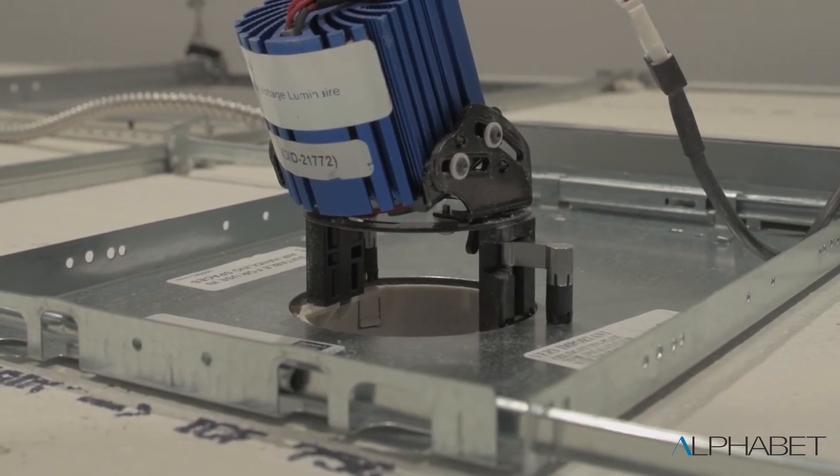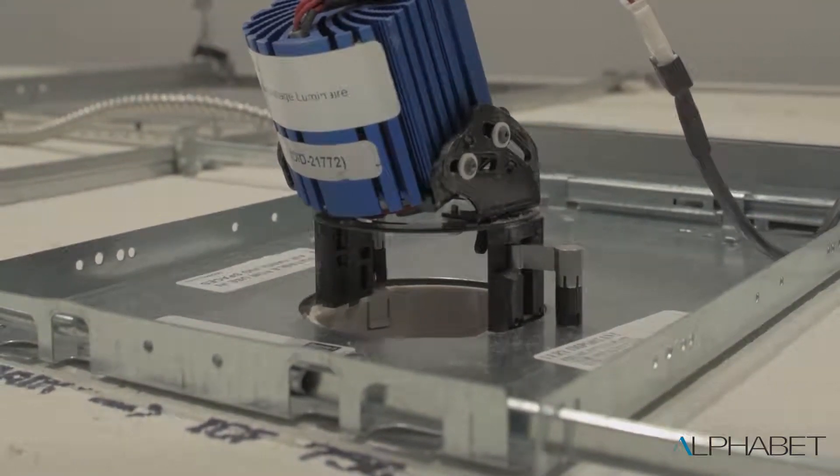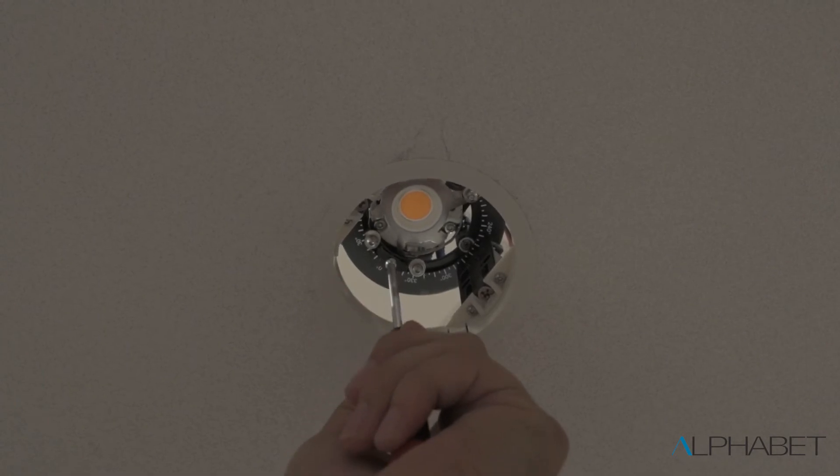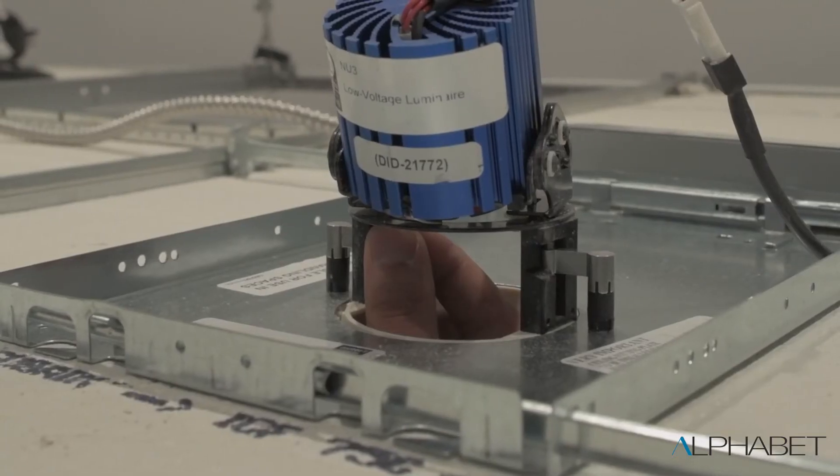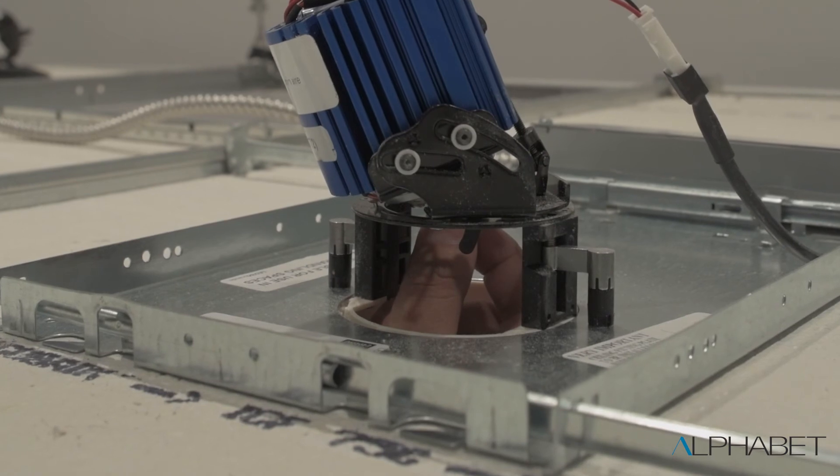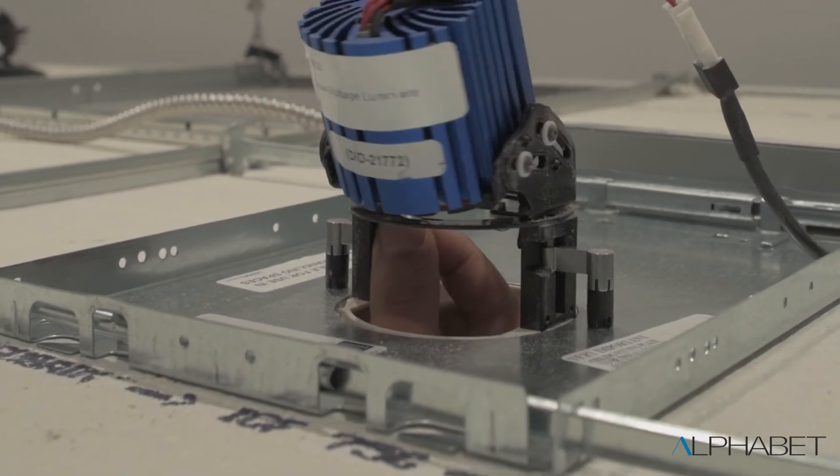Once the fixture is tightened, you can begin to aim. Unlock the rotation via the 2mm hex head screw. Once the desired location is found, lock the fixture rotation by tightening the same screw.